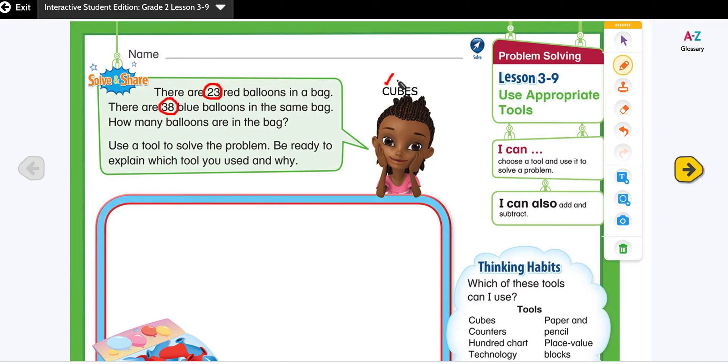U stands for underline the question. The question is how many balloons are in the bag? B stands for box any math action words or the keywords. It says there are 23 red balloons in a bag, there are 38 blue balloons in the same bag. So they are talking about the same bag. So same word is really important.